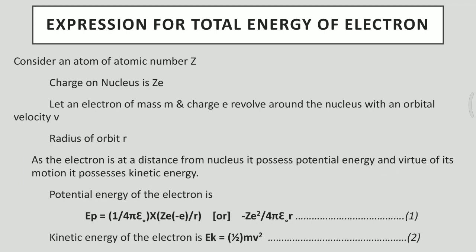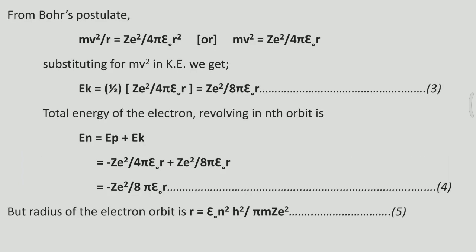The kinetic energy is given by ½mv². From Bohr's postulate, mv²/r = Ze² / (4πε₀r²), meaning the centripetal force equals the electrostatic force of attraction. On cancellation of r, mv² = Ze² / (4πε₀r). Substituting this value of mv² into the expression for kinetic energy, we get the kinetic energy equal to Ze² / (8πε₀r).